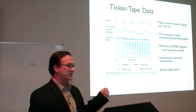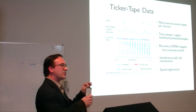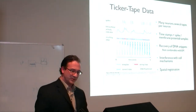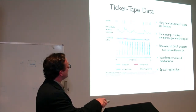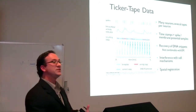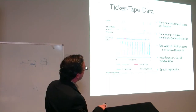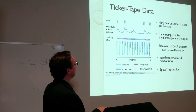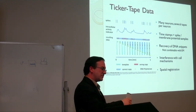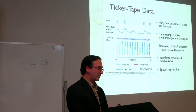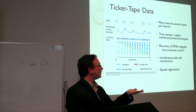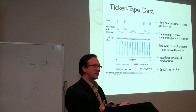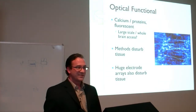For the molecular ticker tapes, you need to insert many tapes into every neuron for reliability, since the amplification process is statistical. This raises the question of whether all that material interferes with the cell's mechanisms — are you changing the system while trying to observe it? You can get time stamps for synchronization, and you can learn about spikes and membrane potentials. But once you recover all the DNA, you no longer have a slice available for electron microscope imaging. So if you want both structural data and functional data, how do you combine those two tools? That's a significant problem.